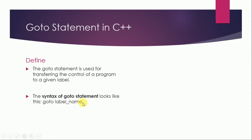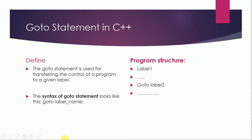Label ka name jahan par bhi likhenge, control wahan par chala jaayega. Program structure mein jaise aapne dekha: label one aur goto label two. Hamare paas goto statement hai, label ka name hai 'label two', aur hum chahte hain ke control directly jump kare - in statement ko print na kare balke seedha wahan pahunch jaaye. Hum isko practically perform karte hain.